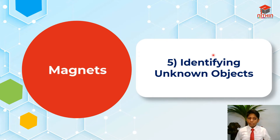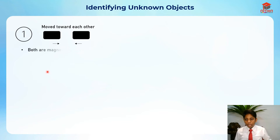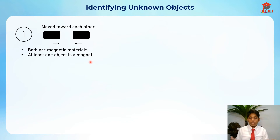For segment number five, I'm going to go through identifying unknown objects. Scenario one: the objects move towards each other. Both are magnetic materials, and at least one object is a magnet, because without a magnet there's no attraction — it will just stay constant. The magnet is the one exerting a pull force.